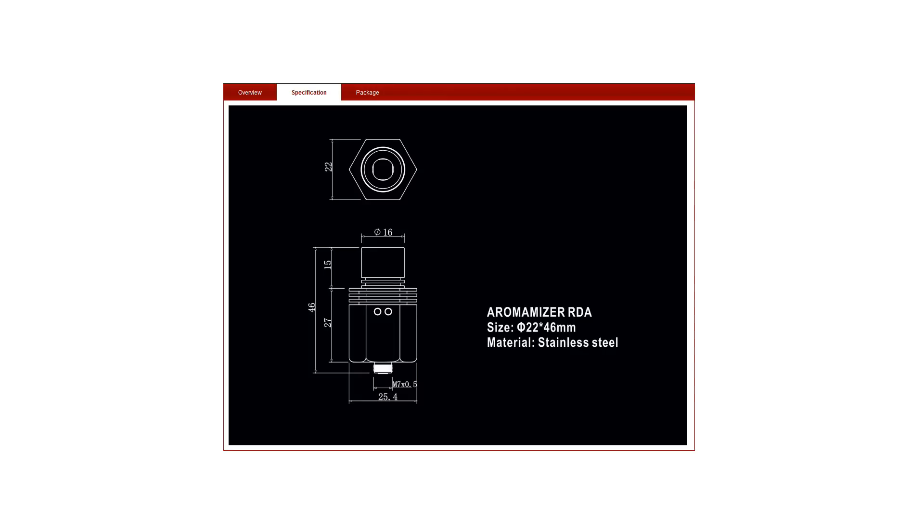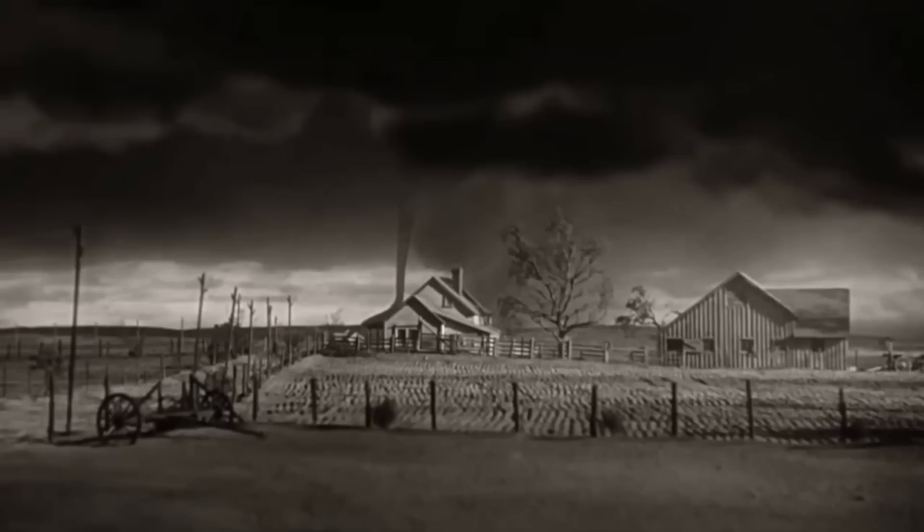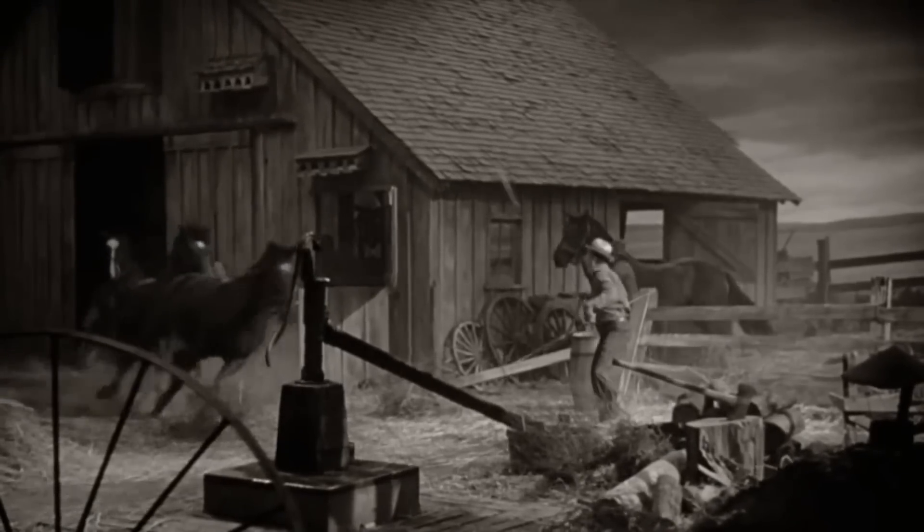The Aromamizer is 22 by 46 millimeters. And here's what's under the hood. Cyclonic airflow. It's a twister!